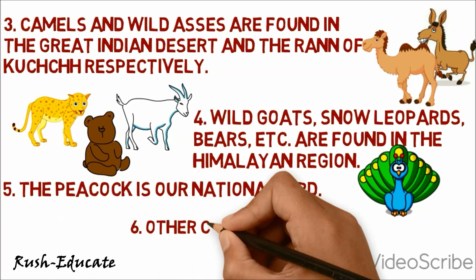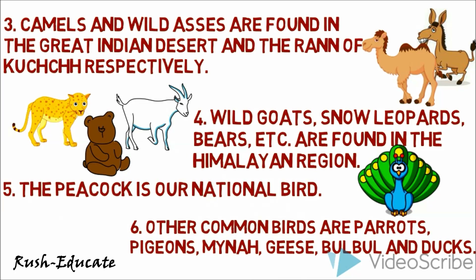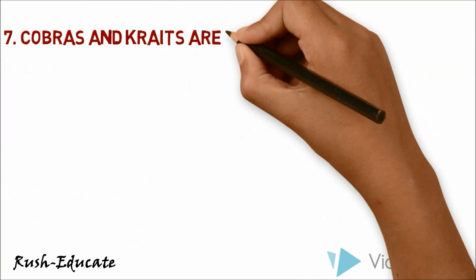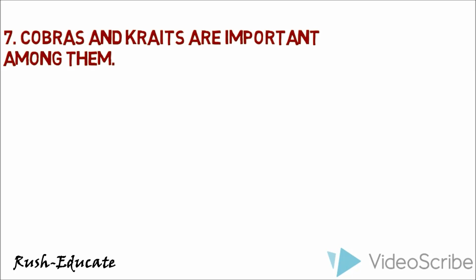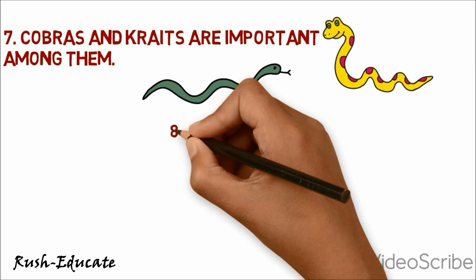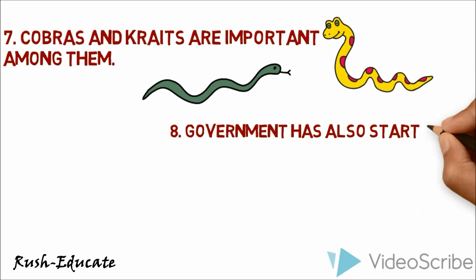India is equally rich in bird life. The peacock is India's national bird. Other common birds are parrots, pigeons, myna, geese, bulbul, and ducks. There are several hundreds of species of snakes found in India. Cobras and kraits are important among them. Due to cutting of forests and hunting, several species of wildlife of India are declining rapidly. Many species have already become extinct. In order to protect them, many national parks, sanctuaries, and biosphere reserves have been set up.